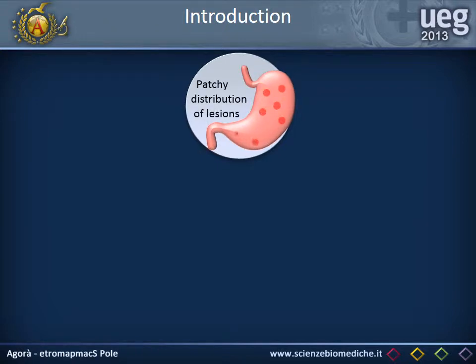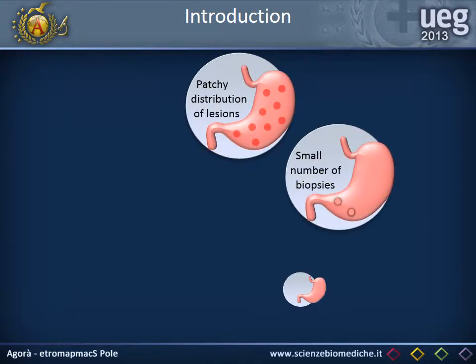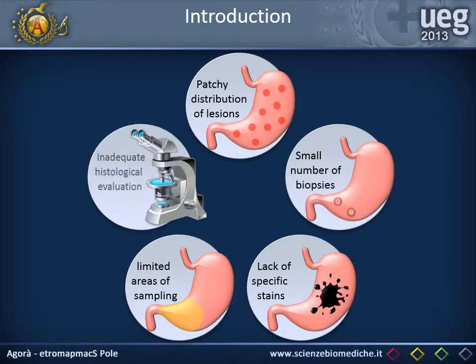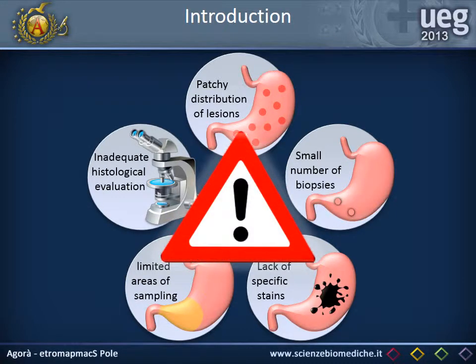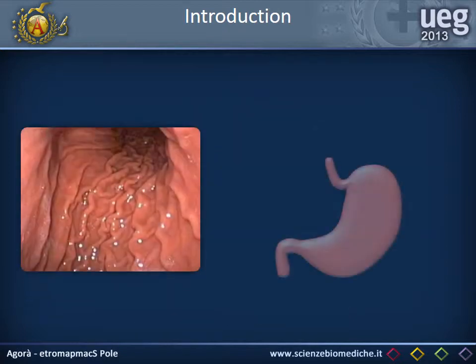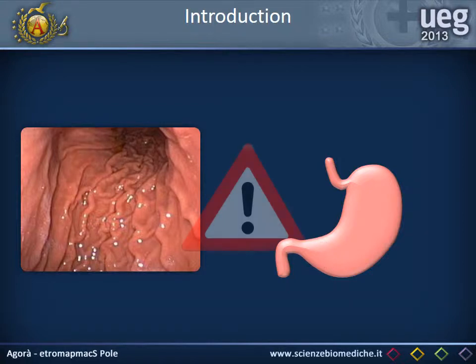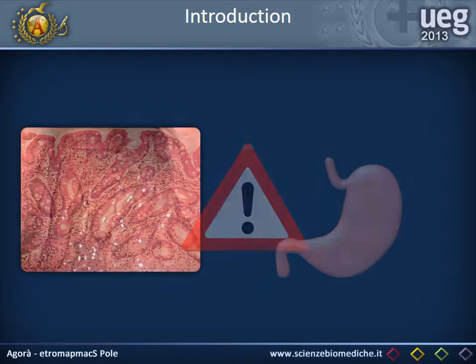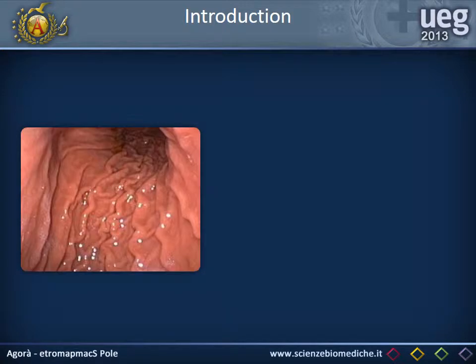Performing gastric biopsies, however, does not ensure total protection from potential diagnostic omission errors. In addition, in patients with abnormal or mild endoscopic findings, the endoscopist only takes a few antral samples or does not perform biopsies at all. Consequently, omission errors may increase.